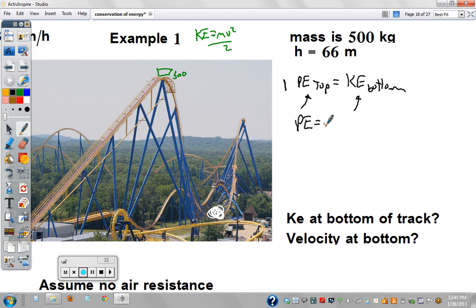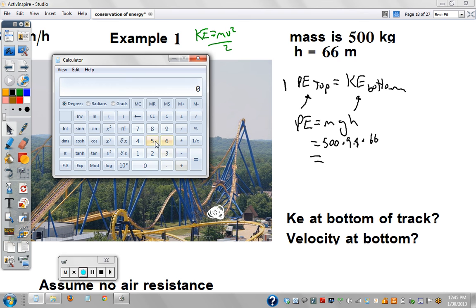So the first thing is solve for potential energy, and then you know they're equal. Potential energy equals mass times gravity times height: 500 times 9.8 times 66, which equals 323,400.